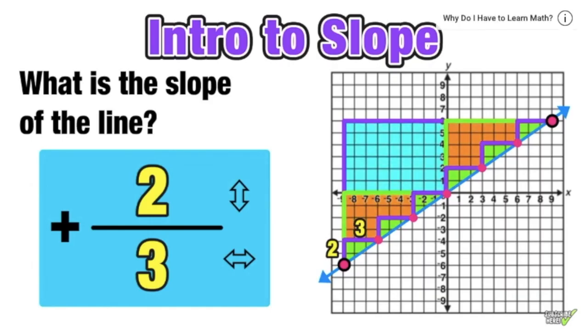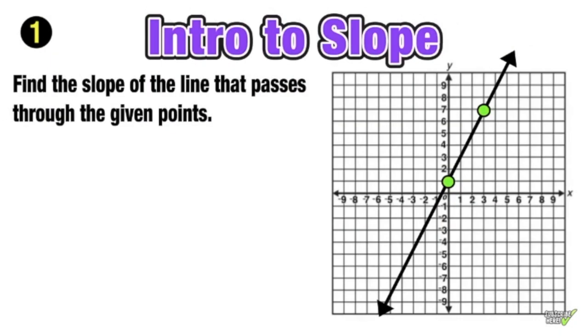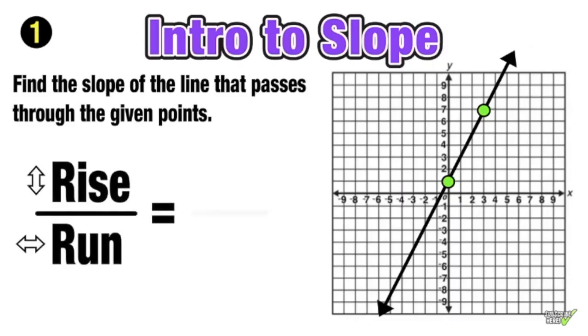That doesn't mean that the other two slopes, the 12 over 18 and the 6 over 9, were incorrect. They just weren't in reduced form. But all three of the slopes that we looked at will take you from one point on the line to another. Here's our first example. We want to find the slope of the line that passes through the given points shown on the graph.